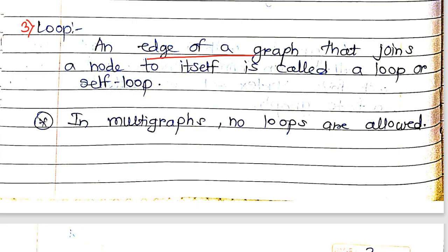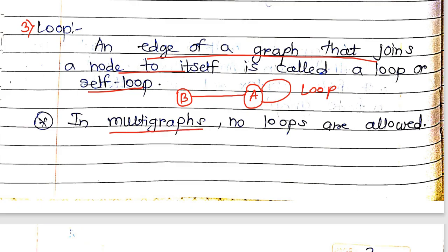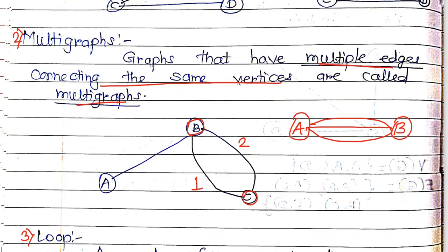The third type is loop, also called a self-loop. An edge of a graph that joins a node to itself is called a loop. For example, if vertex A has an edge connecting back to itself, that is called a loop. Note that in multi graphs, no loops are allowed.